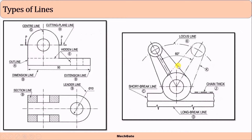Now coming to this section — this component can rotate about this pin or axis, so the movement at the extreme position of this link is shown using this line. This is called the short break line and this is called the long break line. Whenever there is a circle, its center line would always be there. This is called the locus line — it represents the locus of this circle which is moving about this axis, meaning the center of this circle is moving along this direction.